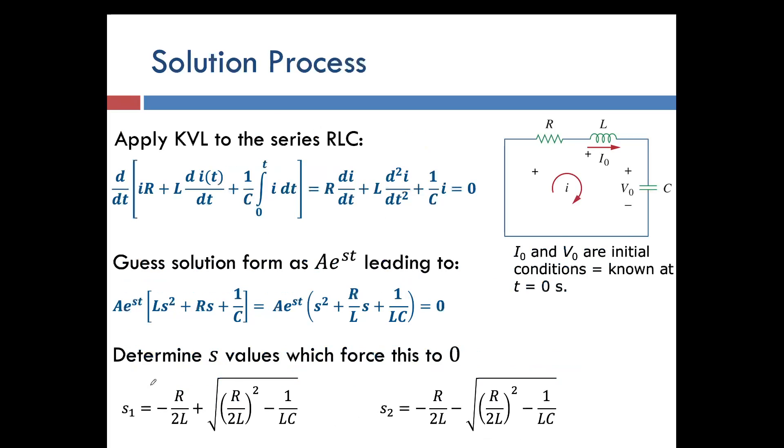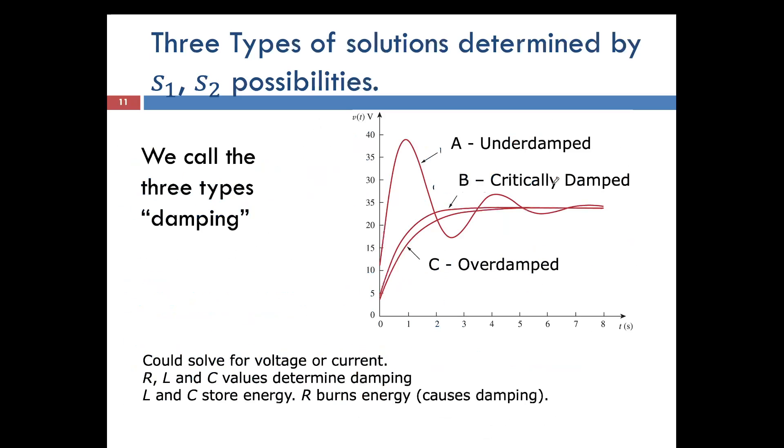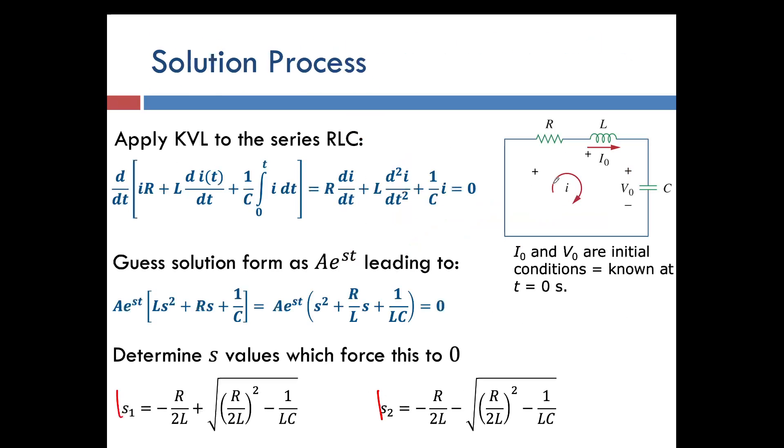So these are equations for S1 and S2 which force this to zero. And there's three possible cases for that. They lead to three different types of what we call damping. So depending on the S1, S2 values, they could be underdamped, critically damped, or overdamped. Again, S1 and S2, these come from the values of R, L, and C that are in your original circuit. So you'll need to know those if you want to get an exact solution.